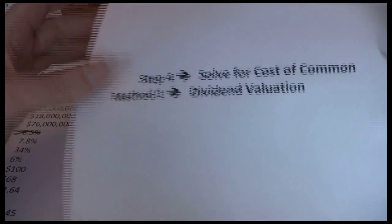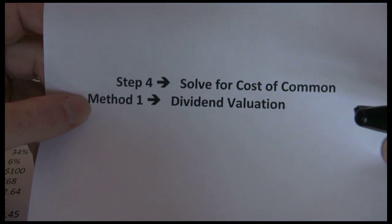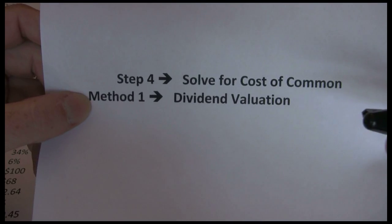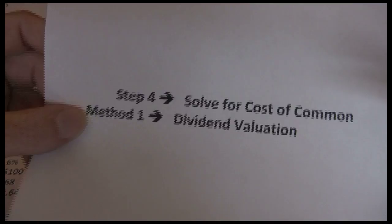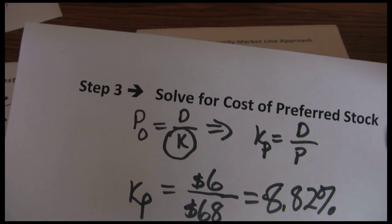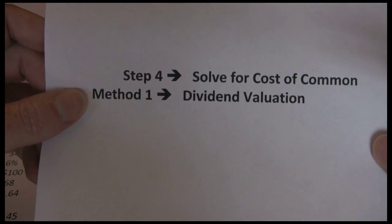Next we can go to solving for the cost of common. Now with cost of common there are several different approaches we take to this because each one has some flaws. The first approach is very similar to what we did up here. We're starting with the pricing model, the dividend pricing model. That's why we call it the dividend valuation approach.